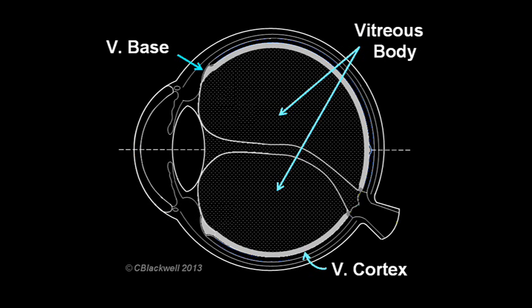The strongest attachment is in the front of the eye at the vitreous base. How strong? Later in life, the vitreous cortex will usually eventually separate from the retina everywhere except at the vitreous base.